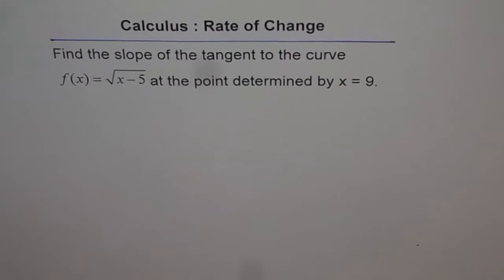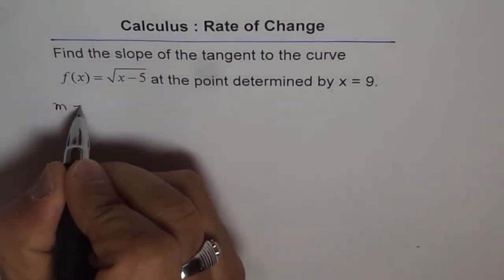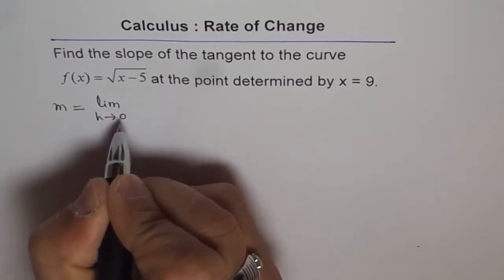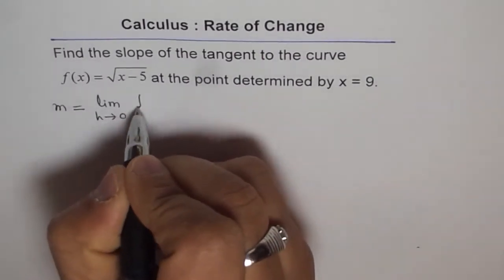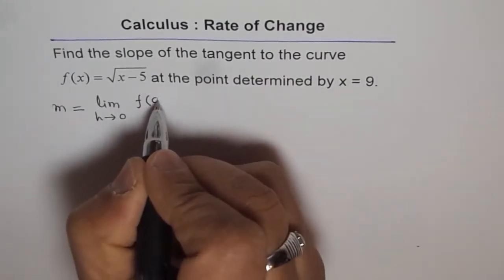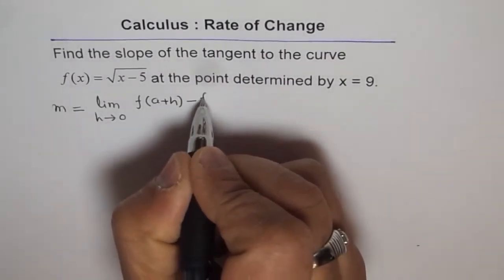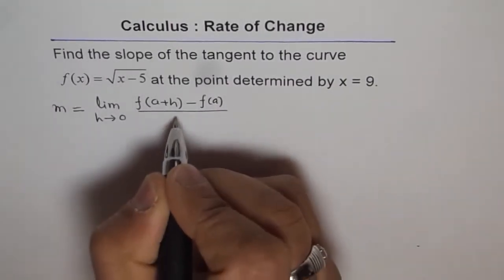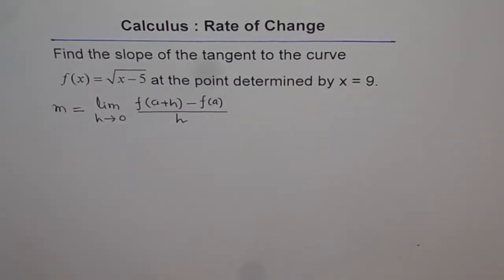To find the slope of the tangent, we will use the difference quotient method. The difference quotient method states that the slope of a line m equals the limit as h approaches 0 of [f(a + h) − f(a)] divided by h.